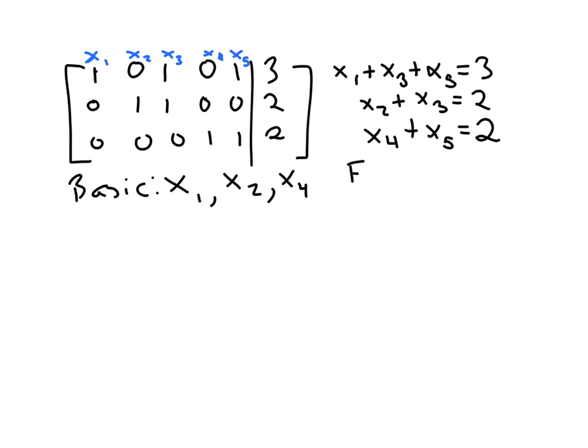And the other variables we call free variables. It turns out in our solution set, the values of these variables, so in this case x3 and x5,